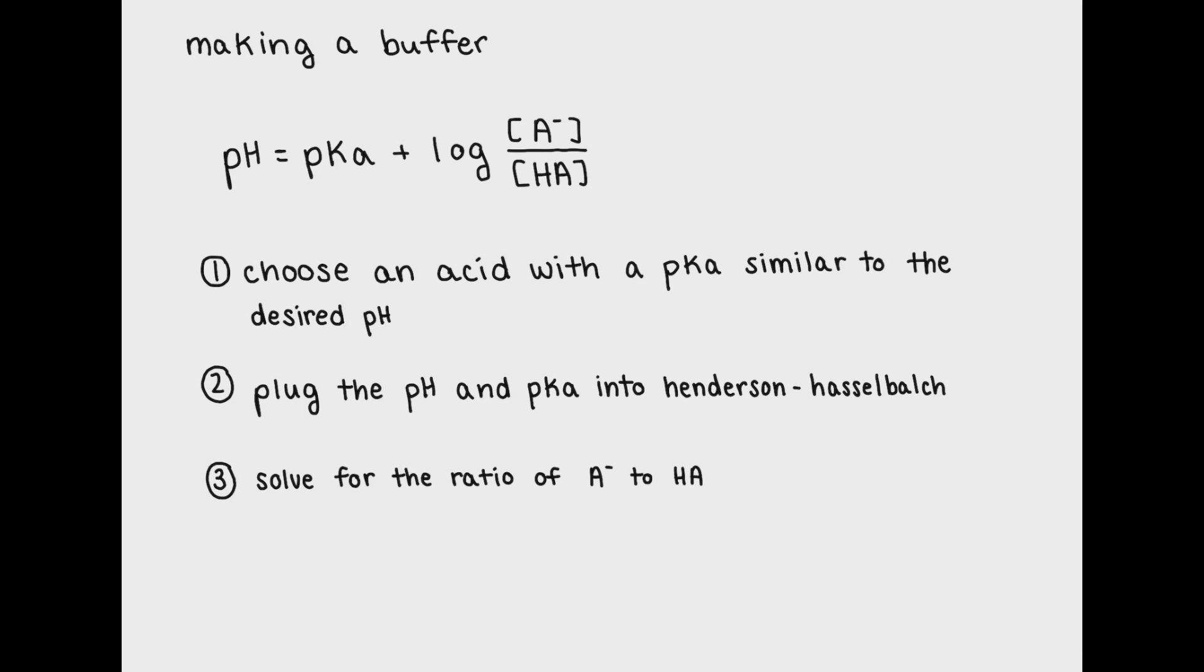After picking your conjugate acid-base pair, you'll want to plug in the pH and pKa to your Henderson-Hasselbalch equation. Then you can solve for your ratio of conjugate base to weak acid. These numbers will then tell you how much of your conjugate acid-base pairs to add into your solution in the lab.